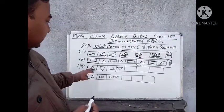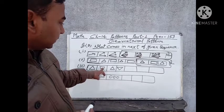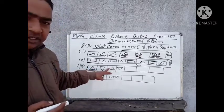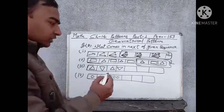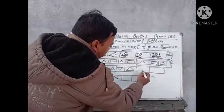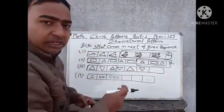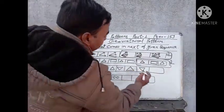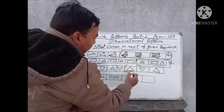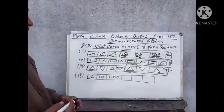The last one: this is a triangle, inverse triangle, right triangle, inverse triangle. What will be next? Next will be triangle, then reverse triangle, then ultra triangle, and next one will be triangle. This three is our answer.